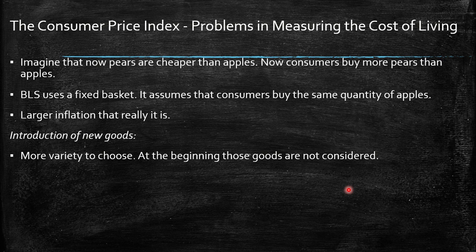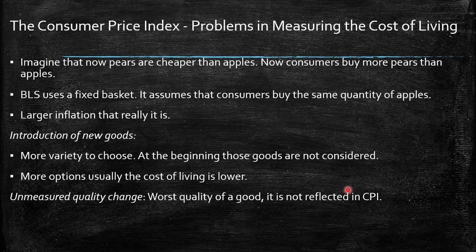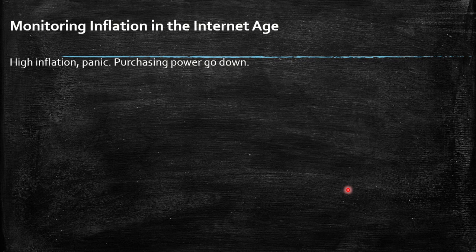The second problem is the introduction of new goods: there is more variety to choose from, but new goods are not initially considered in the basket, even though consumers may buy them. Having more options usually lowers the cost of living in ways not captured by the CPI. The third problem is unmeasured quality change: if a good's quality changes — for example, a device improves or worsens — that is not reflected in the CPI, which only tracks price changes. The overall bias is estimated around 0.5 to 1 percent.